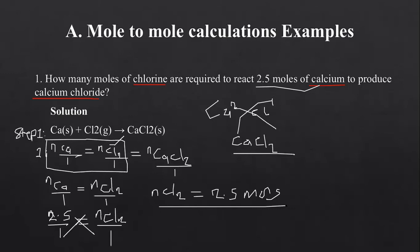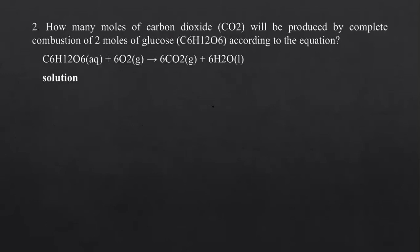Let's look at example number 2. The question reads: how many moles of carbon dioxide will be produced by complete combustion of 2 moles of glucose, according to the given equation? Let's ensure this equation is balanced. We have 6 carbons on the left and 6 carbons on the right. We check.